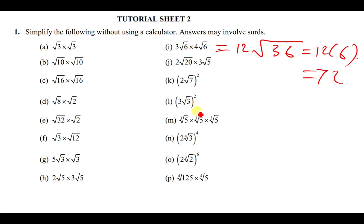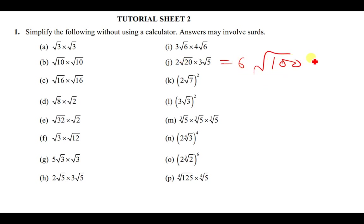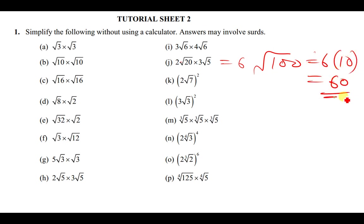For 2√20 × 3√5: outside gives 2×3 = 6, under the root gives 20×5 = 100, so 6√100 = 6×10 = 60.